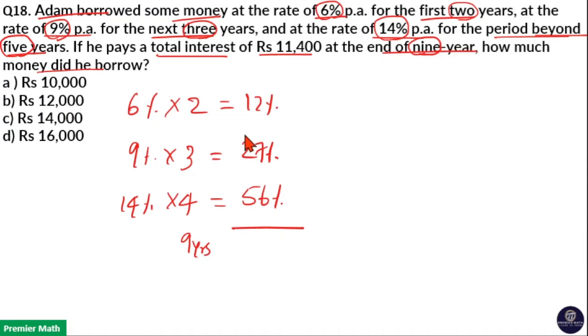5 plus 2 is 7, 7 plus 1 is 8, 7 plus 6 is 13, 13 plus 2 is 15. So 80 plus 15 is 95%. So for 9 years, he paid 95%.